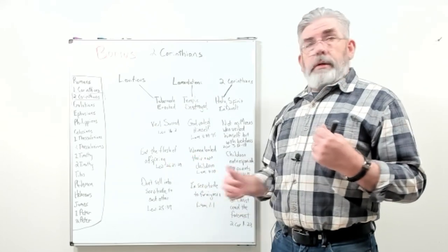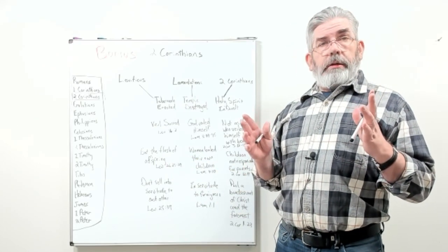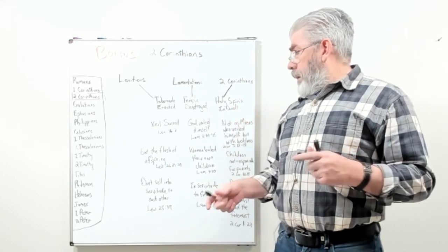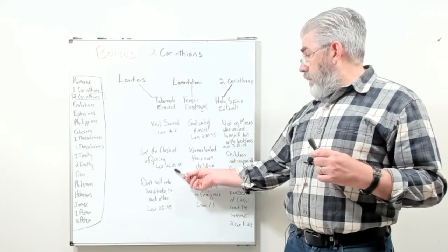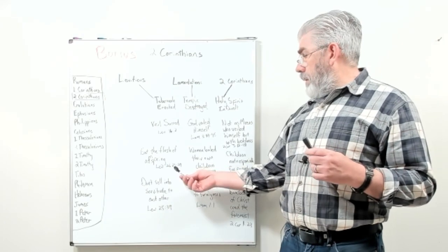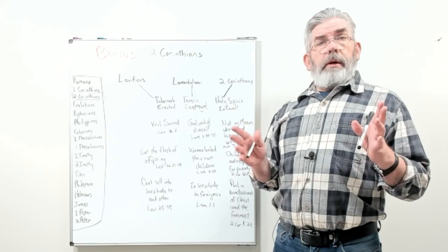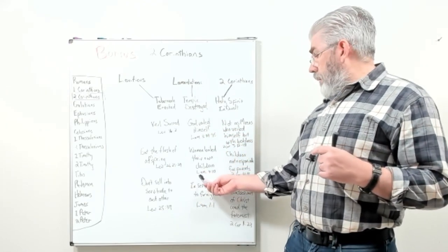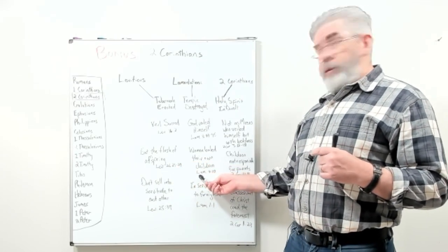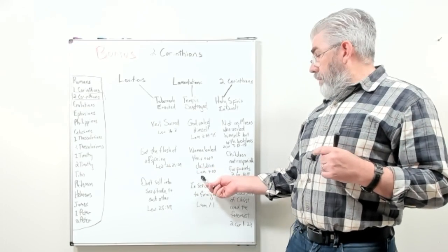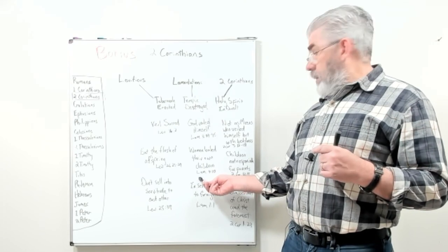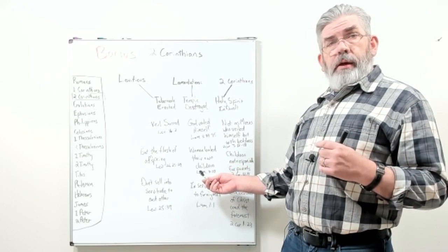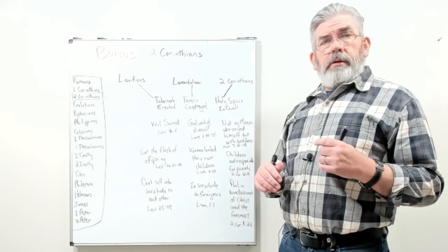In Leviticus 26, God warns them: if you don't heed my chastisements, I'm going to punish you seven times more, and the punishments get worse. Towards the end of that chapter, Leviticus 26:27-29, he basically says it's going to be so bad that you're going to be eating the flesh of your own children. Then guess what happens in Lamentations 4:10? This is the third book of the history corresponding to the third book of the prophets. In Lamentations 4:10, they actually have come to that point — women have boiled their own children and eaten their flesh to survive the sieges of Nebuchadnezzar. It's also mentioned in chapter 2.